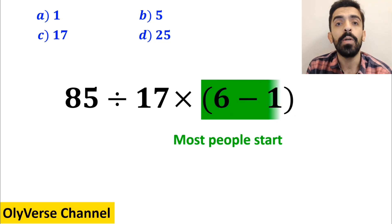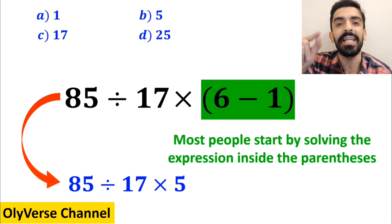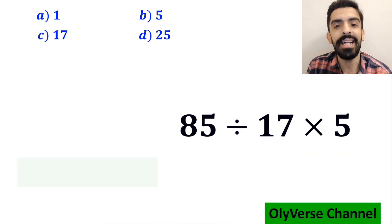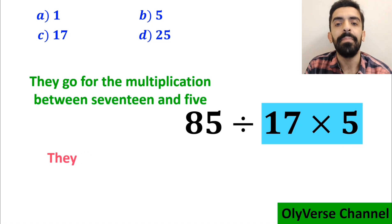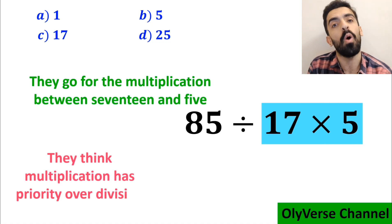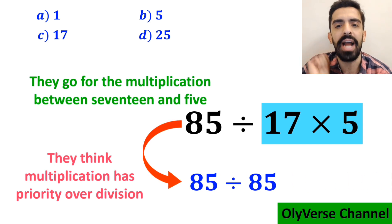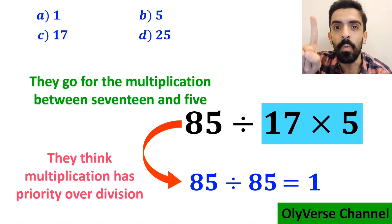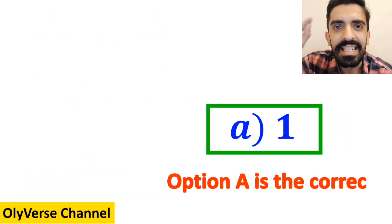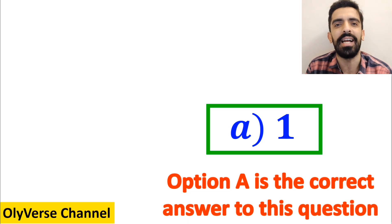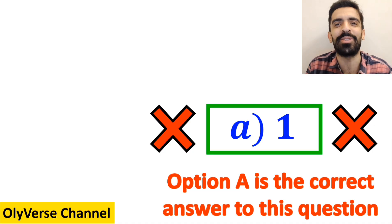In the first step most people start by solving the expression inside the parenthesis and replace it with 85 divided by 17 multiplied by 5. In the next step they go for the multiplication between 17 and 5, because they think multiplication has priority over division. So this expression simplifies to 85 divided by 85, which gives them the answer 1, and they quickly say option A is correct — but that's not the right answer.